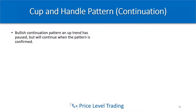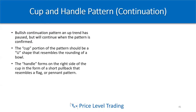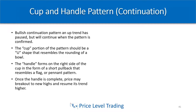Cup and handle patterns are also very reliable continuation patterns. For a bullish continuation, the uptrend has paused but will continue when the pattern is confirmed. The cup portion should be a U shape resembling the rounding of a bowl. The handle forms on the right side of the cup in the form of a short pullback that resembles a flag or pennant pattern, before we break out to the upside. Once the handle is complete, price may break out to new highs and resume the trend higher.